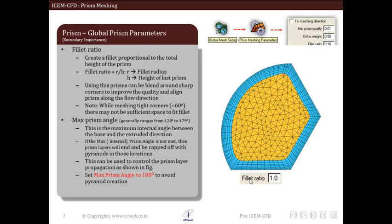Next parameter is maximum prism angle. This is the maximum internal angle between the base and extruded direction. If this criteria is not met then prism layers will end and will be capped by pyramid. We will see the example in the figure.